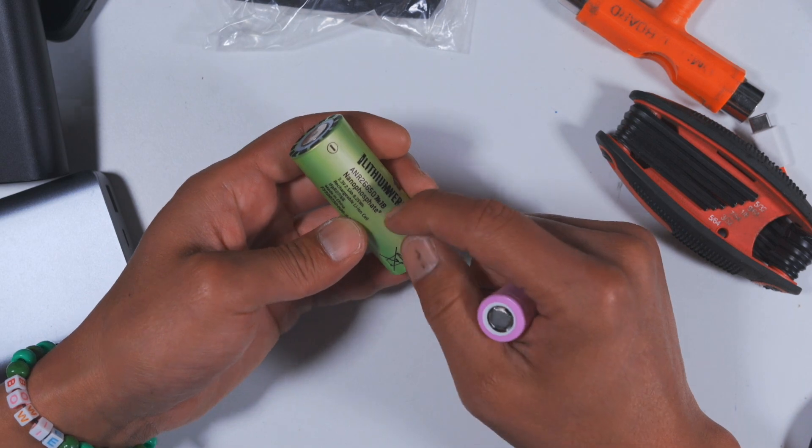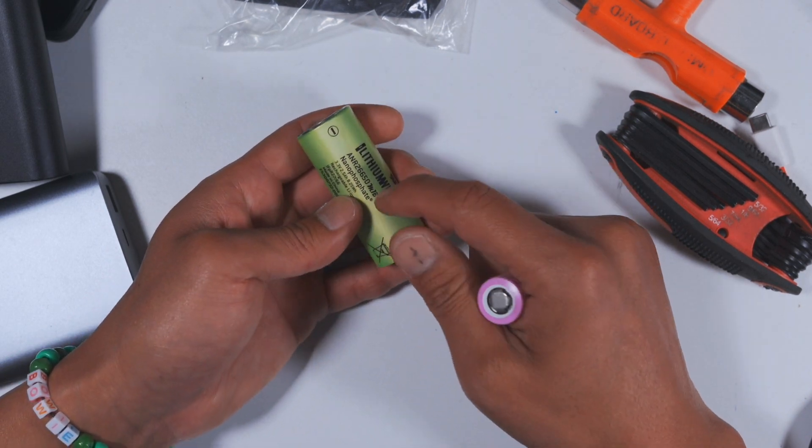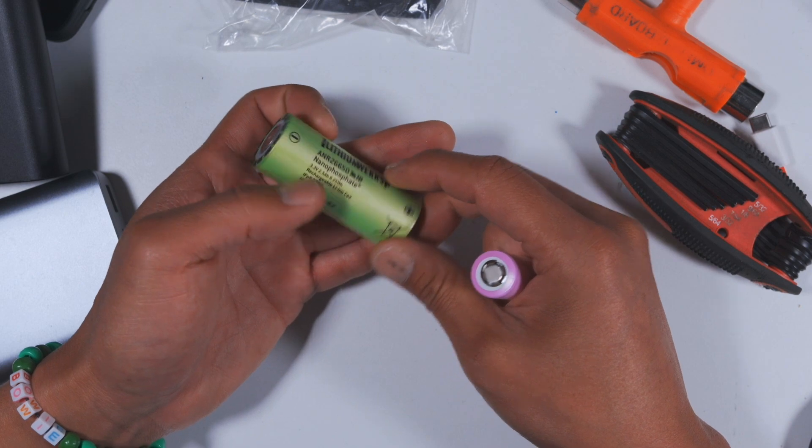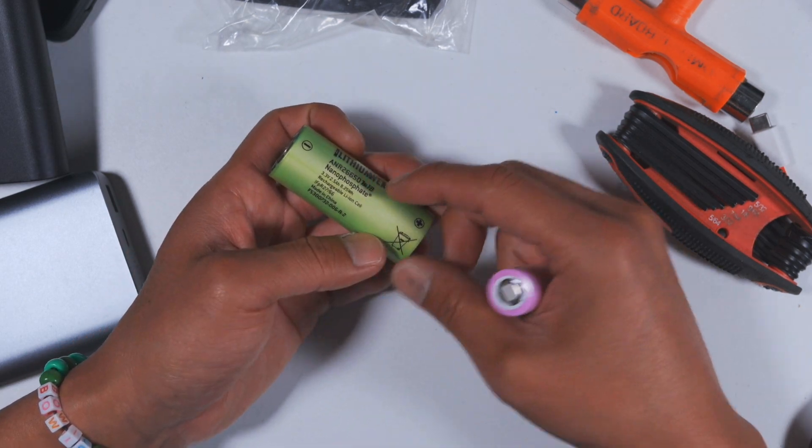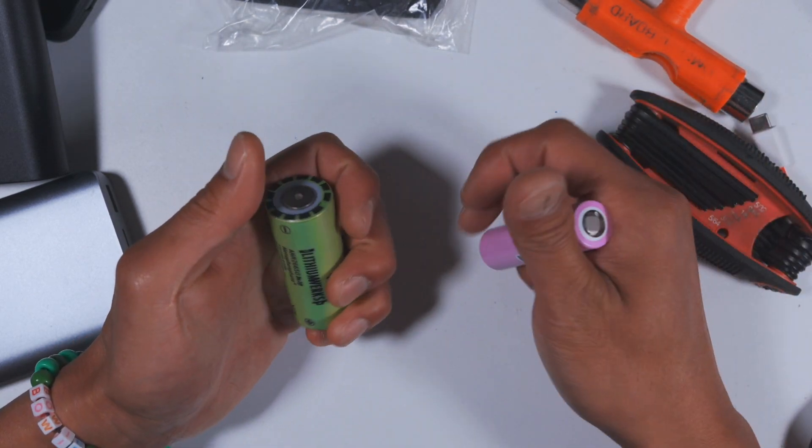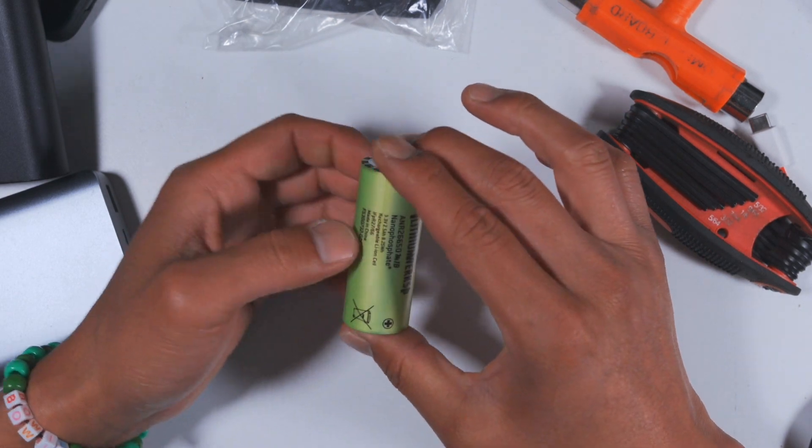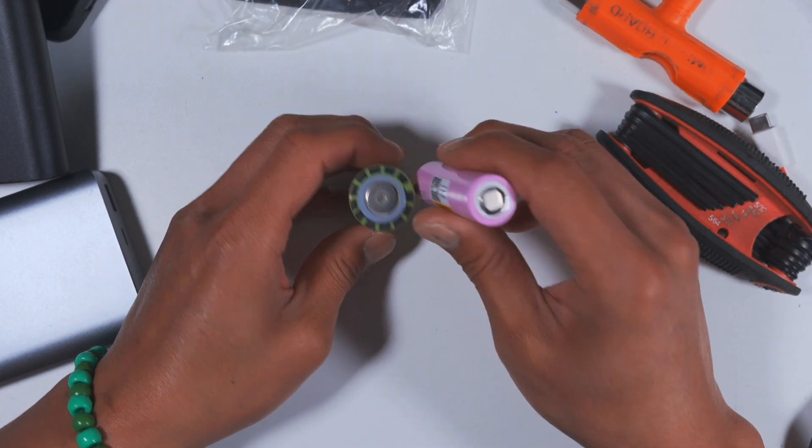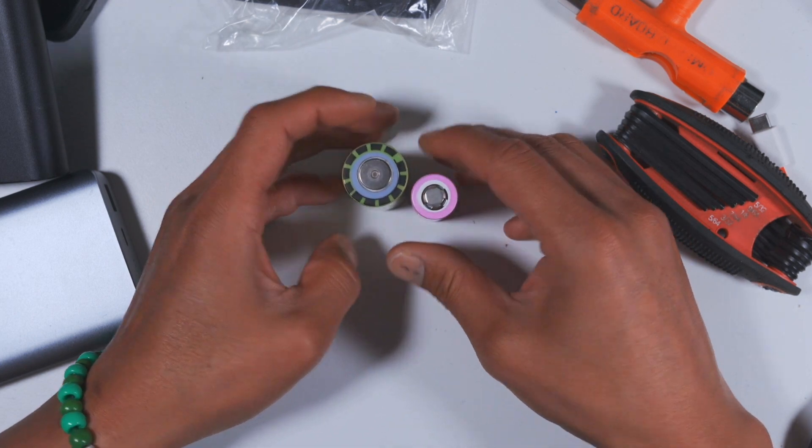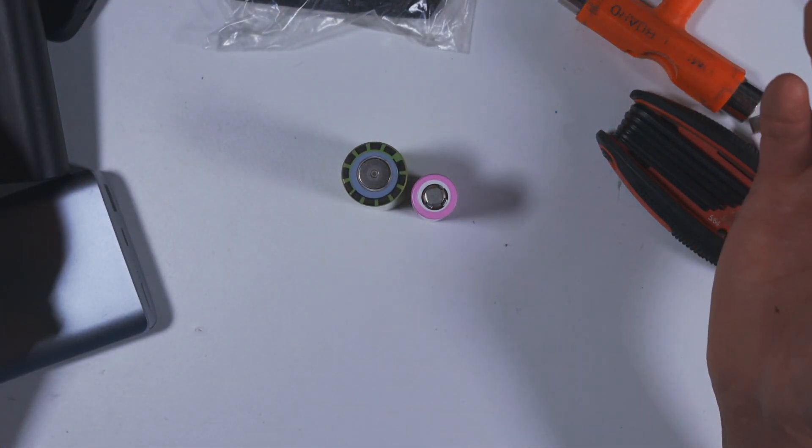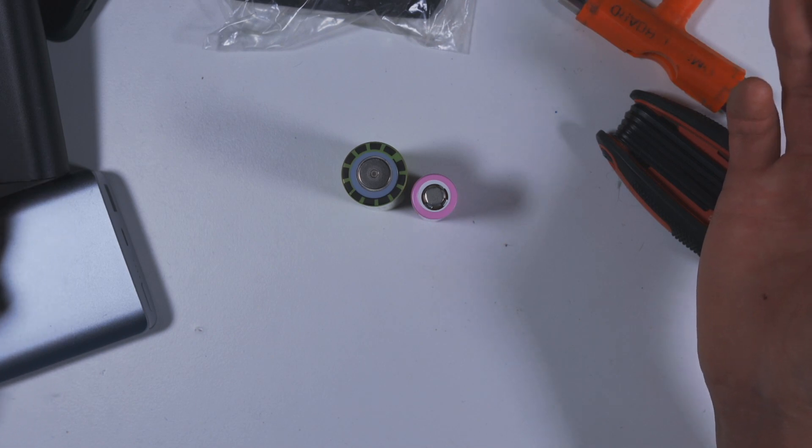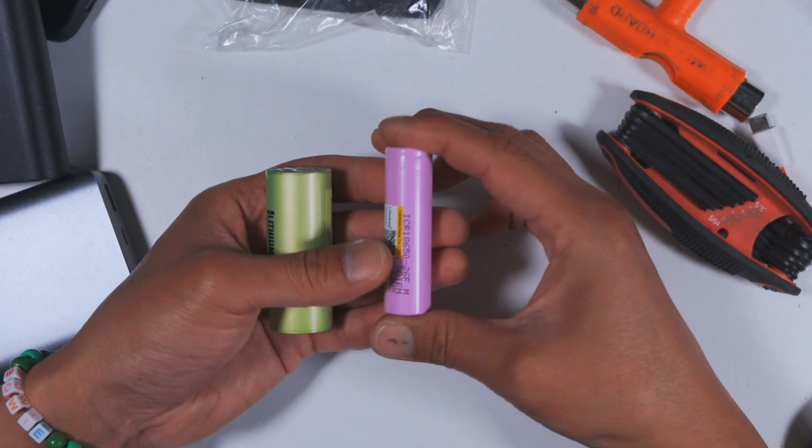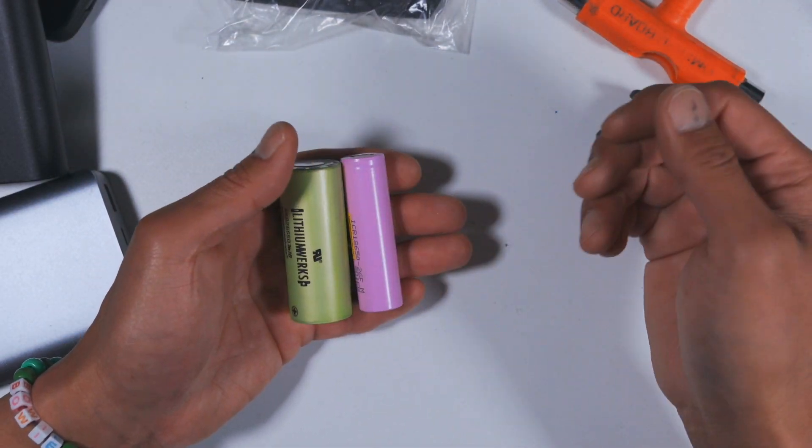The power output, the instant output, the maximum continued output is like I think 50 amps. So each cell can handle a ton of amps without getting hot, without degrading the battery. So this is actually a really good cell, but the problem is the size. It's almost double the size and volume, so you end up... you look at the boosted mini, the battery size is huge. You can make the same capacity way smaller with 18650.